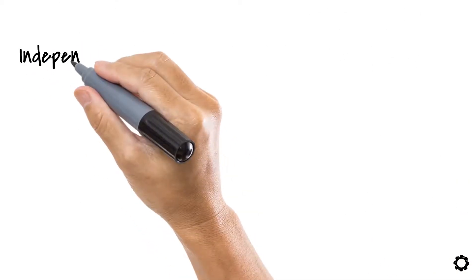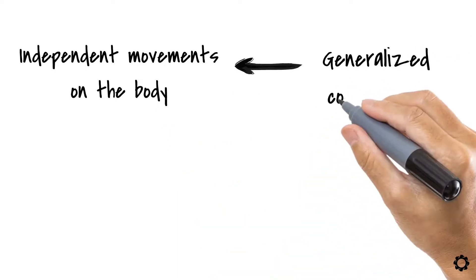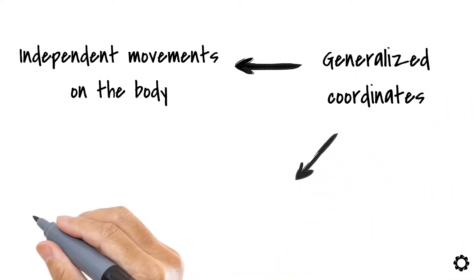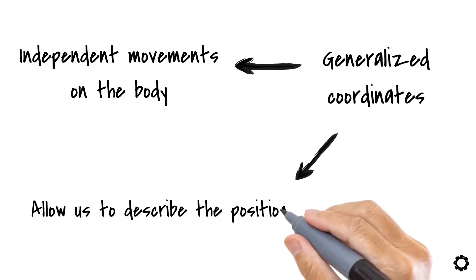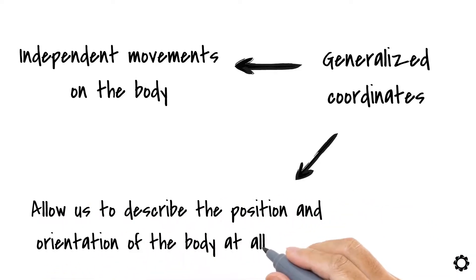These independent movements on the body are what we call generalized coordinates. Generalized coordinates allow us to describe the position and orientation of the body at all times.